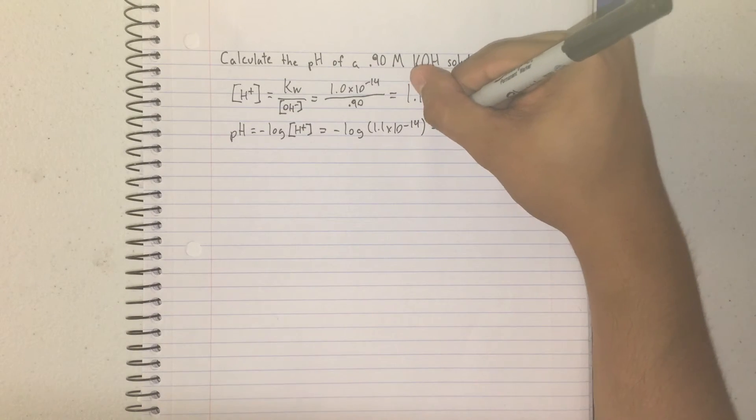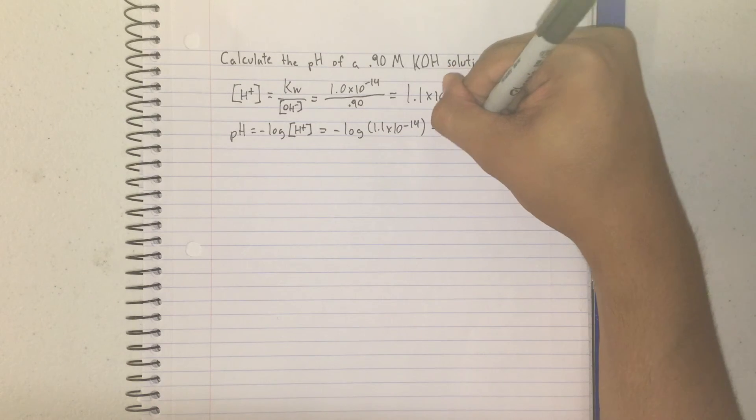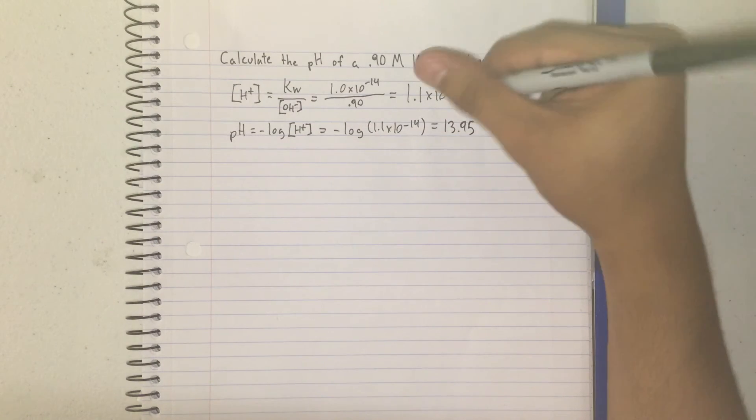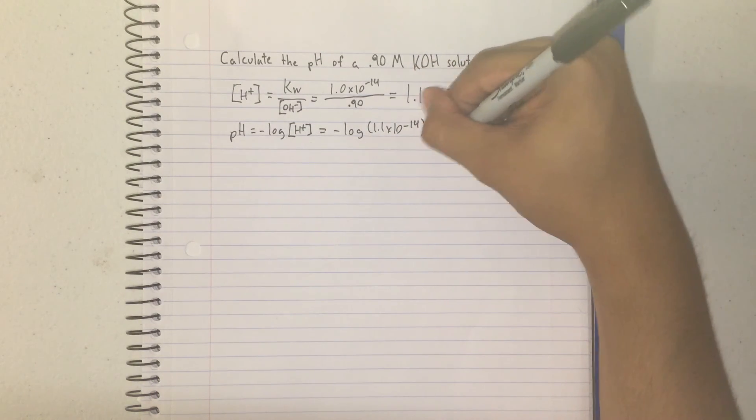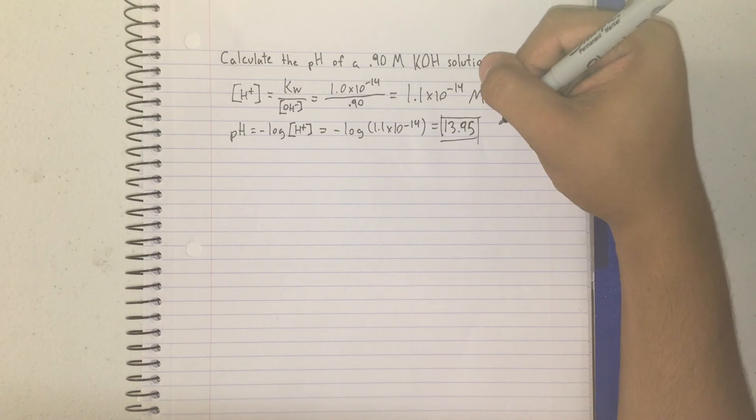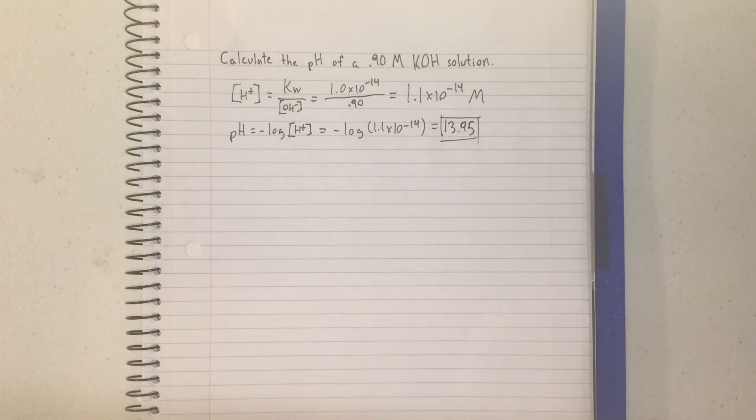So our pH after all will be 13.95, and that's how you find the pH of a KOH solution.